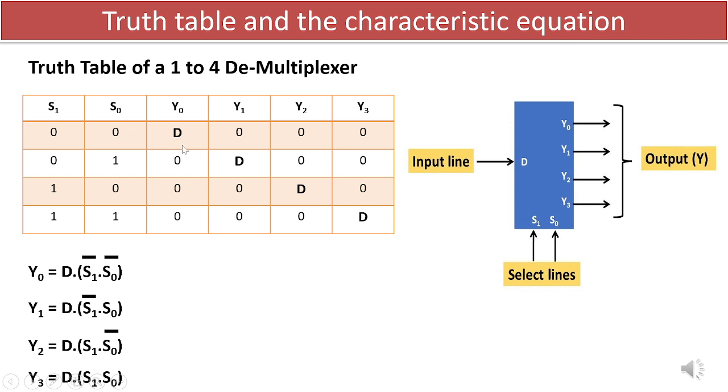Typically, we would consider the high outputs to derive product terms or min terms. However, in this scenario, we must include D in the truth table instead of simply using 1 or 0 logic. As a result, the boolean expressions for all the outputs can be formulated as follows.